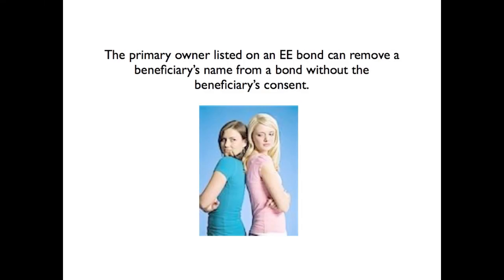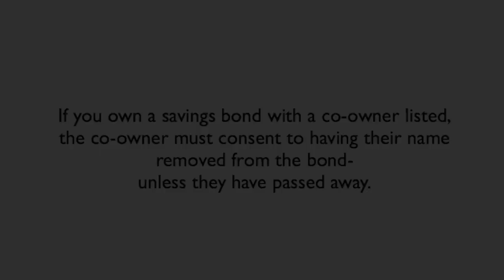The primary owner listed on an EE bond can remove a beneficiary's name from a bond without the beneficiary's consent. If you own a savings bond with a co-owner listed, the co-owner must consent to having their name removed from the bond, unless they have passed away.